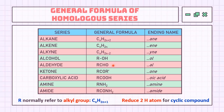The general formula of each series is different from one another due to the different functional groups present. Homologs from the same series may have similar chemical properties because they share the same functional group. But due to the extra methylene — the CH2 group — which makes up the series, there will be a slight change in terms of their physical properties. There are some cases where classes of compounds are the same, such as alkane and cycloalkane, but their homologous series are different.